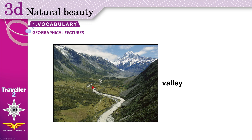Valley: an area of lower land — this land is low, not high — between two lines of hills or mountains, usually with a river flowing through it, but not always.